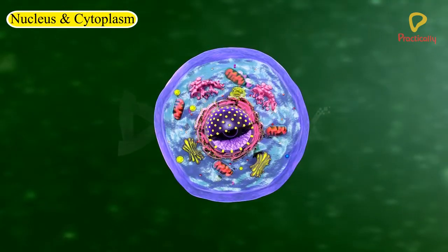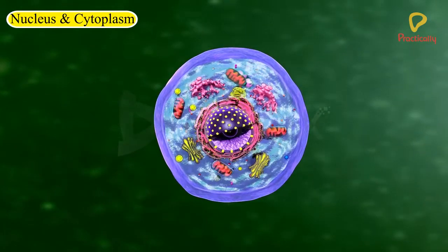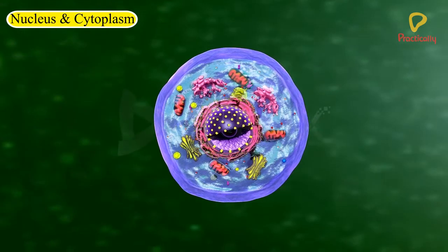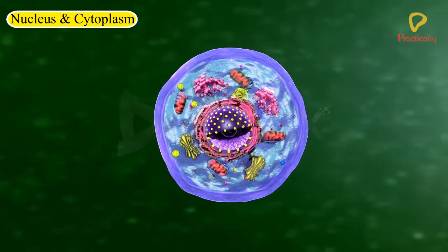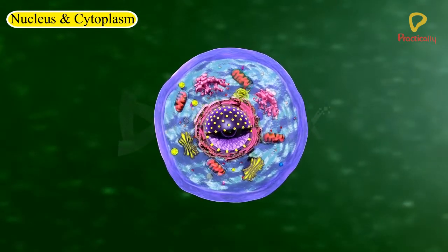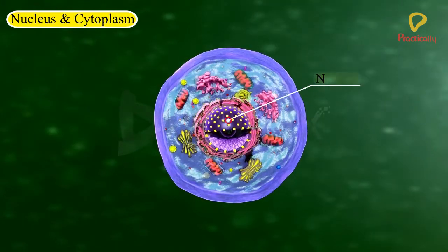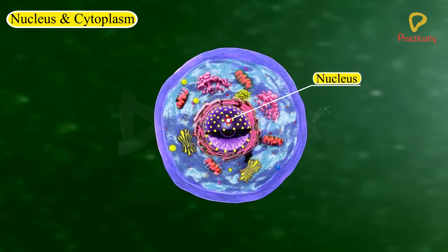Nucleus. A darkly coloured, spherical or oval, dot-like structure near the centre of each cell is called nucleus.